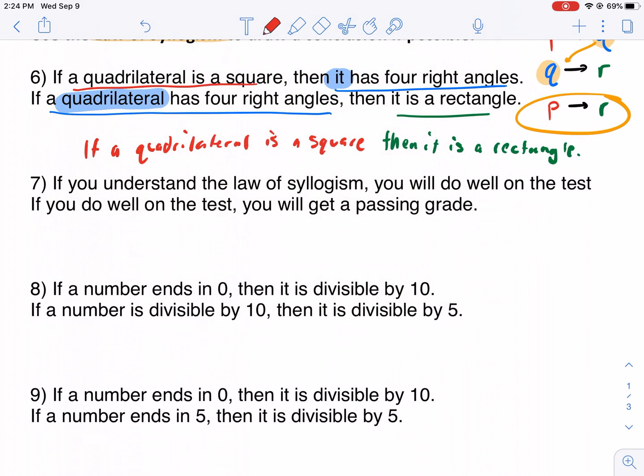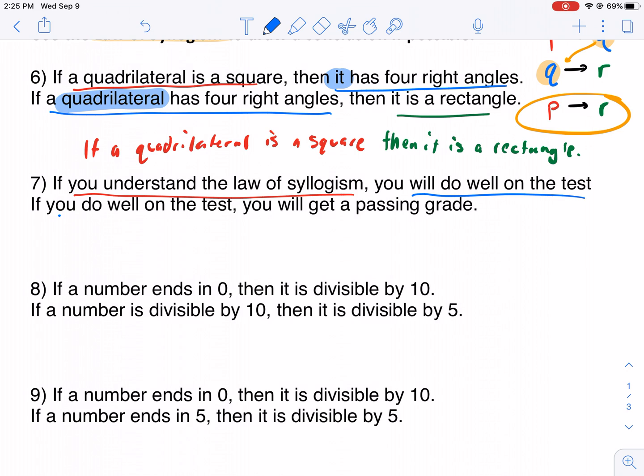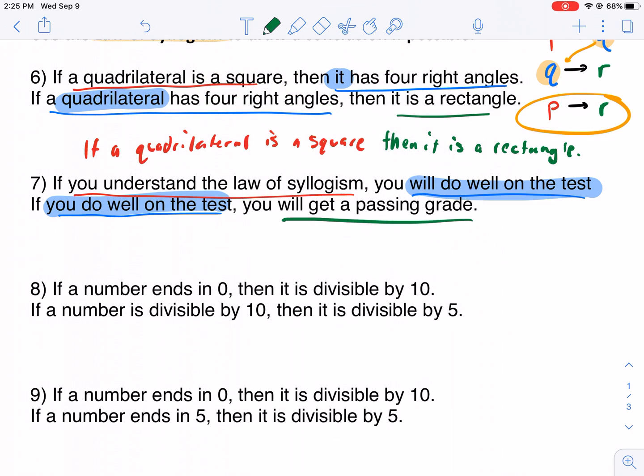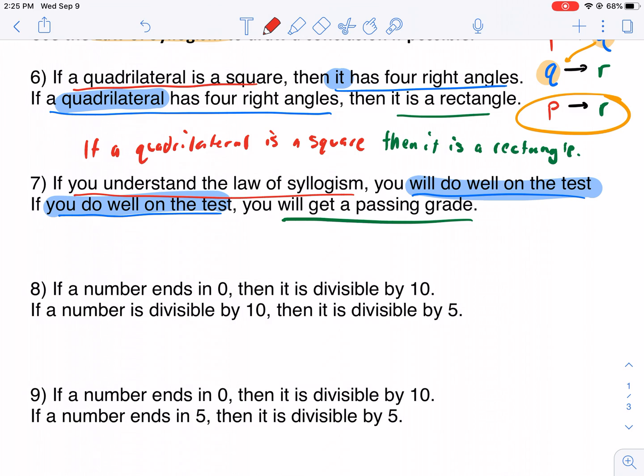Let's do the next one. If you understand the law of syllogism, very tongue-in-cheek here, you will do well on the test. If you do well on the test, notice how these match, and they actually match exactly. So really obvious here that we're going to be okay with the law of syllogism. You will get a passing grade. Let's connect the two. If you understand the law of syllogism, you will get a passing grade. Very good.